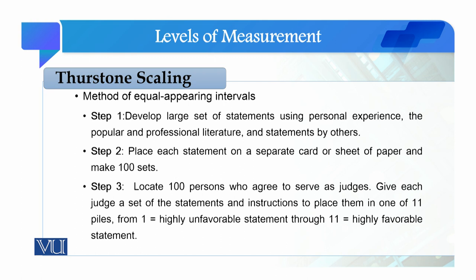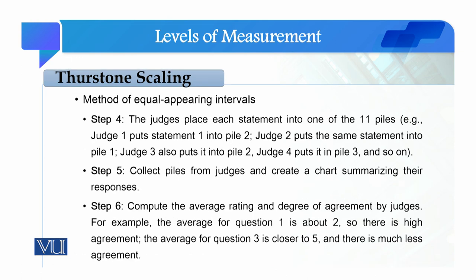Step 3: judges rate statements from highly favorable to highly unfavorable. Highly unfavorable is coded 1 and highly favorable is coded 11, so each statement is rated on a scale of 1 to 11. Step 4: each of the 100 judges places each statement into one of 11 boxes. For instance, judge one places statement one into a box, judge two places the same statement into box one, judge three places the statement into box two, judge four into box three, and this process continues for all 100 persons across all statements and 11 boxes.